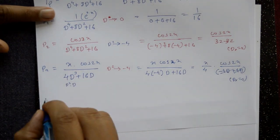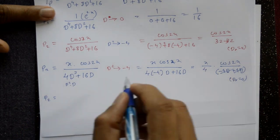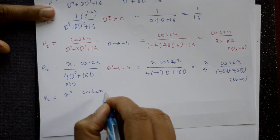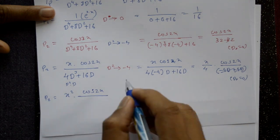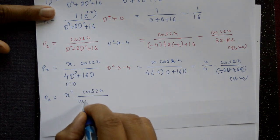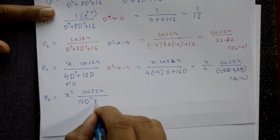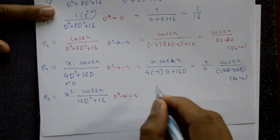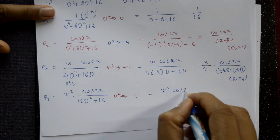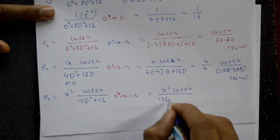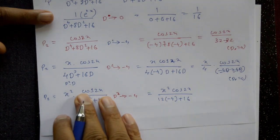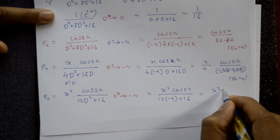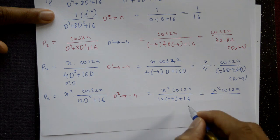Multiply by x again: numerator becomes x²·cos2x, and differentiate denominator again: d²/dD²(D⁴ + 8D² + 16) = 12D² + 16. Applying Type 2, D² = -4: 12(-4) + 16 = -48 + 16 = -32. So P2 = x²cos2x / (-32) = -x²cos2x / 32.